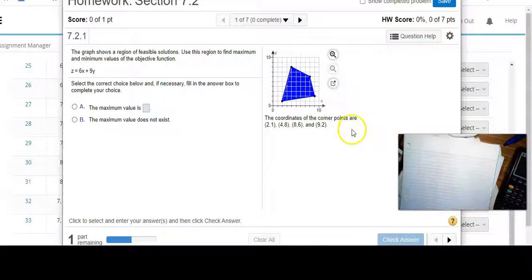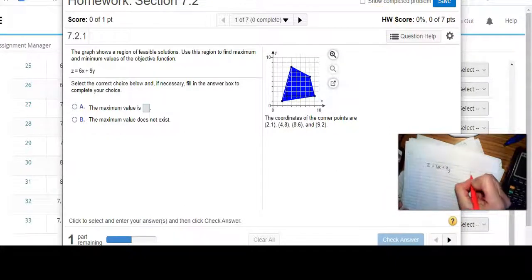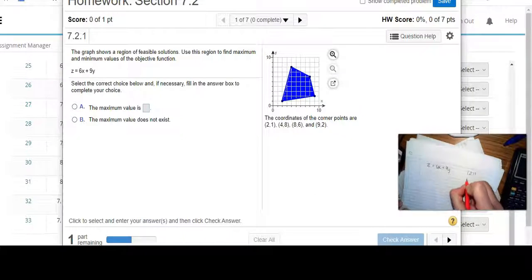So they've given us the coordinates of the corner points, and they've also given us an objective function. In other words, this is what we are trying to maximize or minimize. So my objective function is z equals 6x plus 9y. My coordinates are going to be 2,1, 4,8, 8,6, and 9,2.